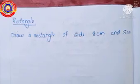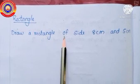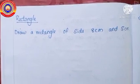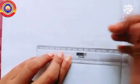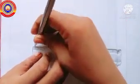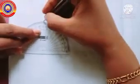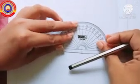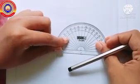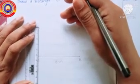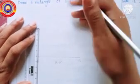You are all familiar with how to draw a rectangle with specified sides from your smaller classes. Let's do a question: draw a rectangle with sides 8 centimeters and 5 centimeters. First draw a line of length 8 centimeters, then place the protractor at point A and mark 90 degrees, and also place the protractor at B and mark 90 degrees. Draw lines 5 centimeters from the endpoints such that the angles are 90 degrees.